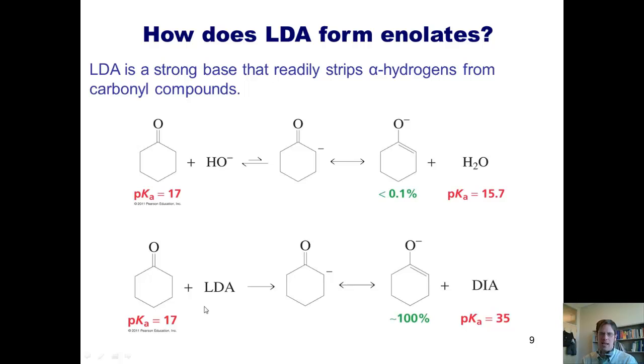Let's compare that with LDA. Once again, the pKa of the alpha proton in cyclohexanone is 17. When LDA strips that alpha proton, it is converted into diisopropyl amine. The pKa of diisopropyl amine is 35. That means that diisopropyl amine is much less acidic than the alpha proton in cyclohexanone. Hence, this enolate is not going to be able to rip off a proton from diisopropyl amine and revert back to the starting material. Thus, if I incubate cyclohexanone with LDA, it will convert to this enolate in almost 100% conversion.